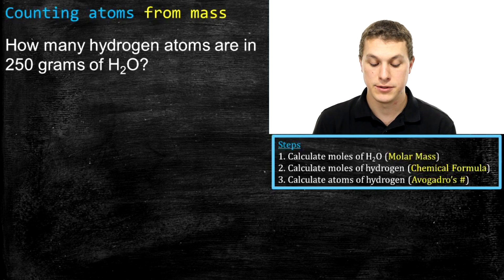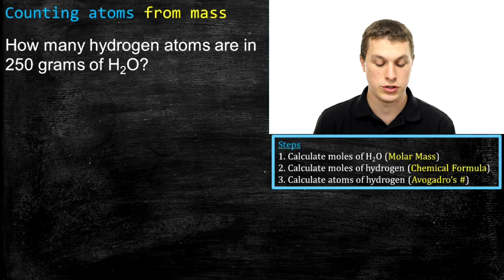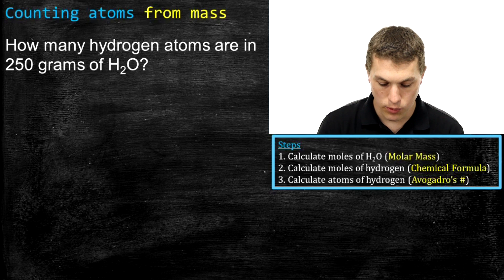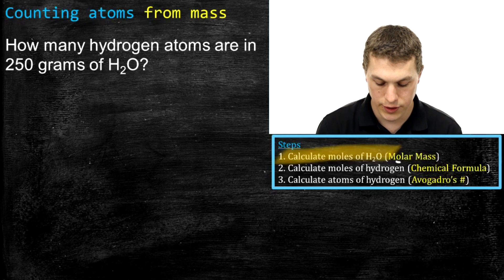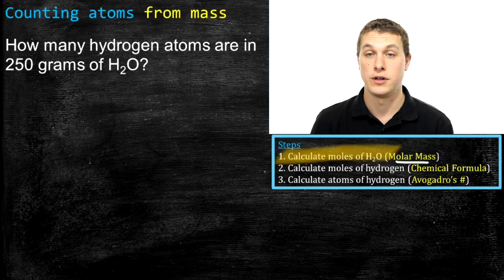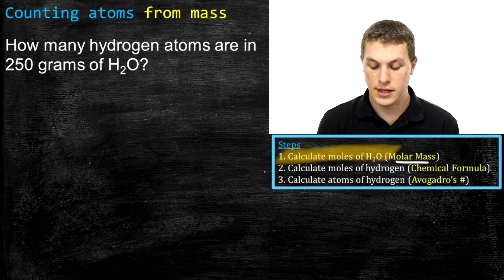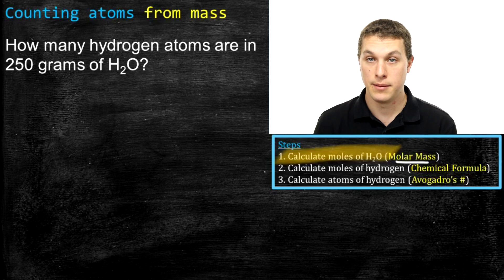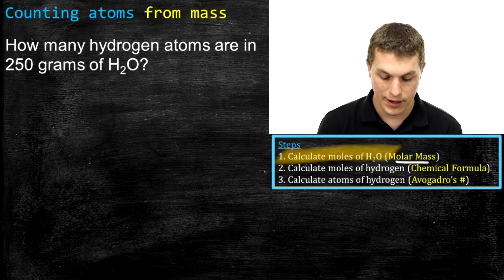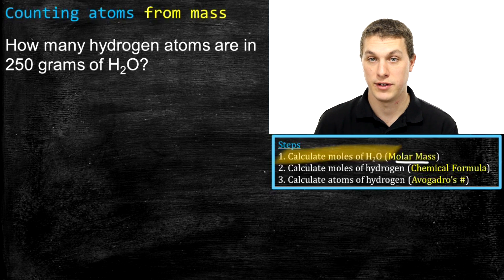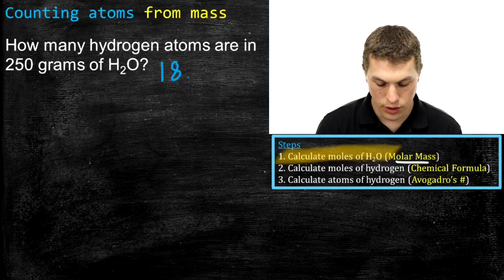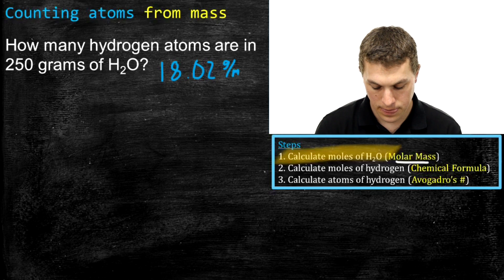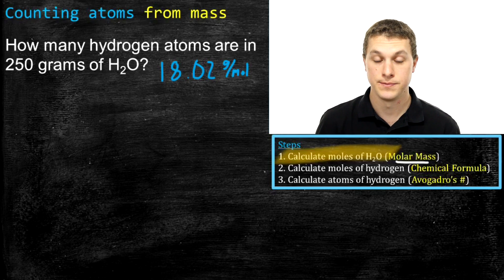I've broken this conversion into three steps. Step one: calculate the moles of H2O using molar mass. We use the molar mass of water — two times the molar mass of hydrogen plus one times the molar mass of oxygen from the periodic table — which gives 18.02 grams per mole. That's the molar mass of water and our first conversion factor. Starting with 250 grams of H2O, we multiply by 1 mole over 18.02 grams to go from grams to moles.